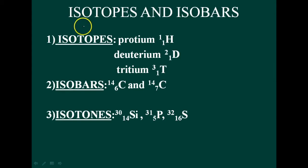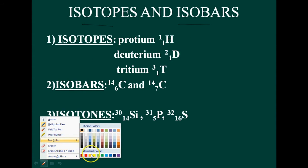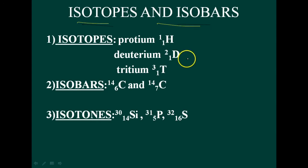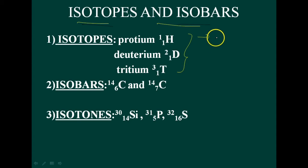Our next topic is isotopes and isobars. Isotopes are species with identical atomic number but different atomic mass number. They are having the atomic number same but different atomic mass number.